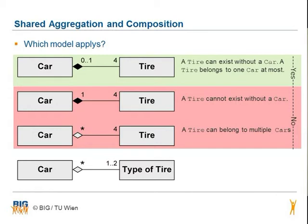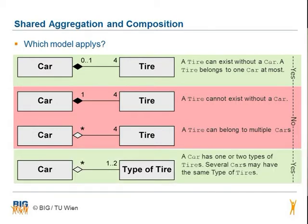Do you think the last model is true? Yes, it is true. In the last example, a car has one or two types of tires. Several cars may have the same type of tires.